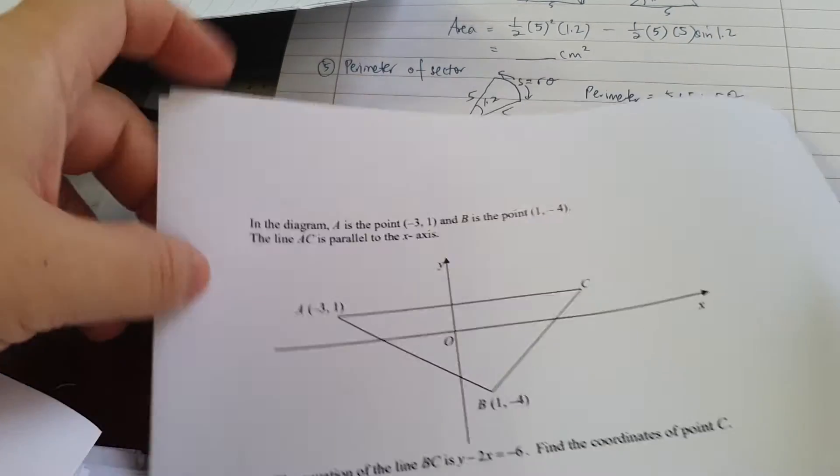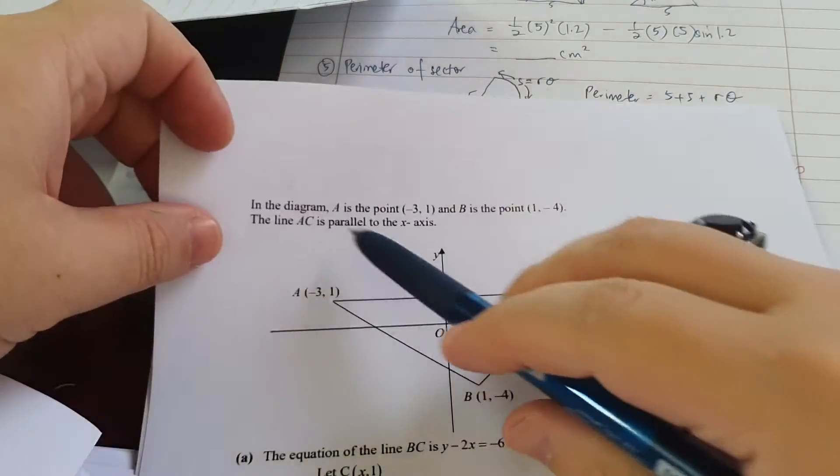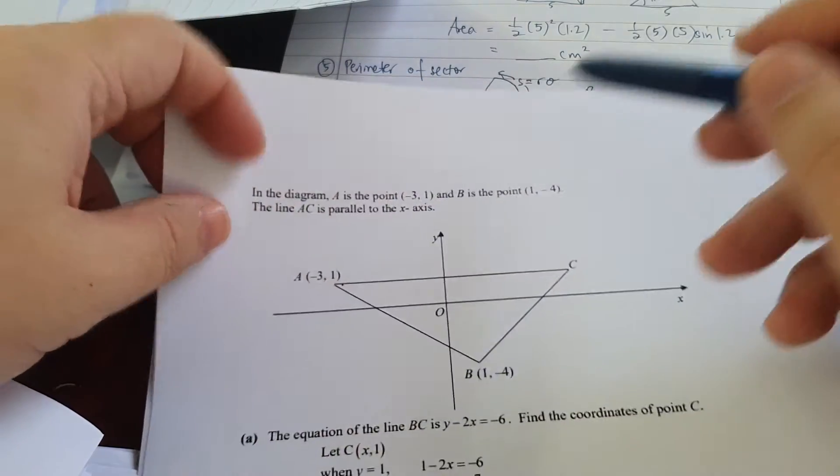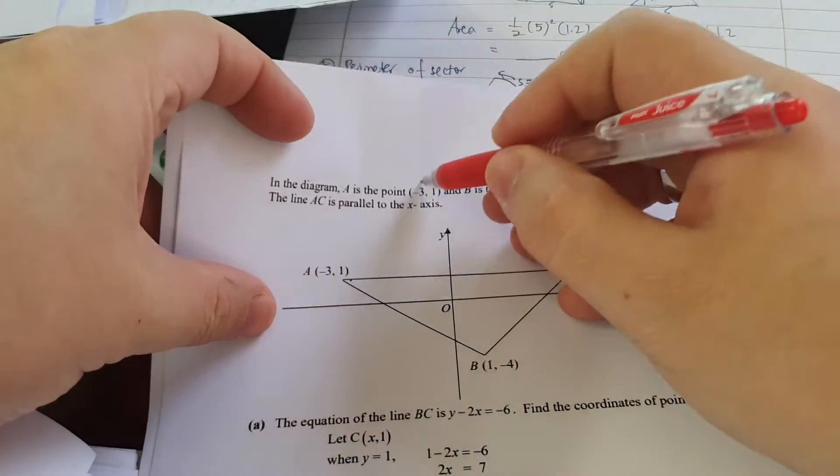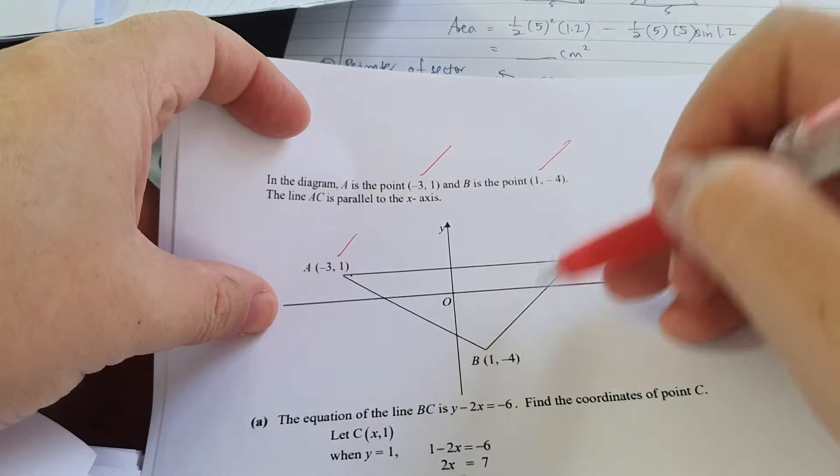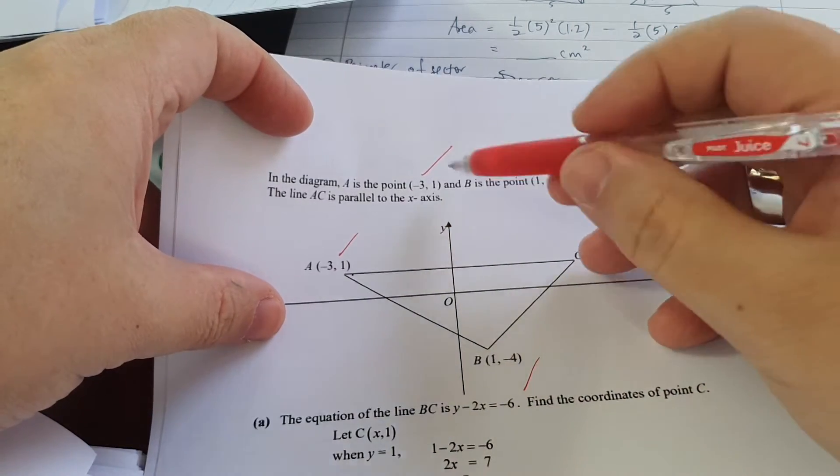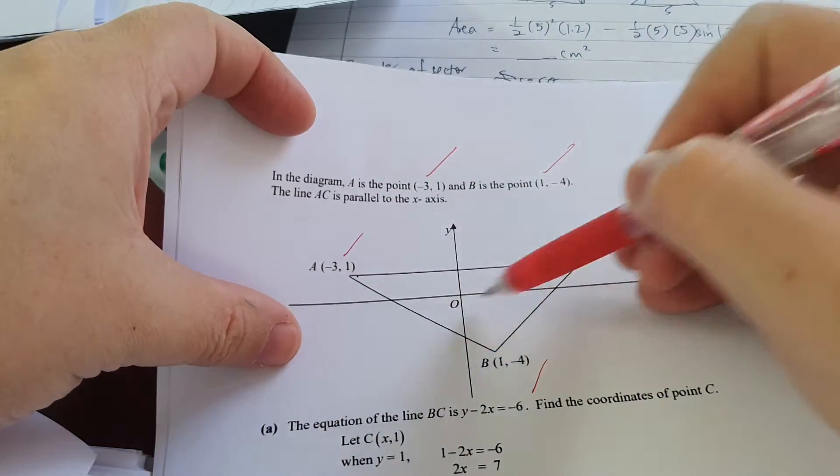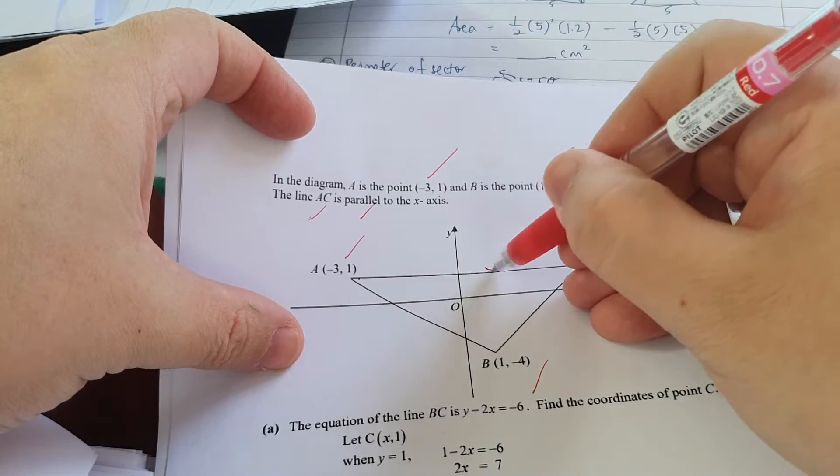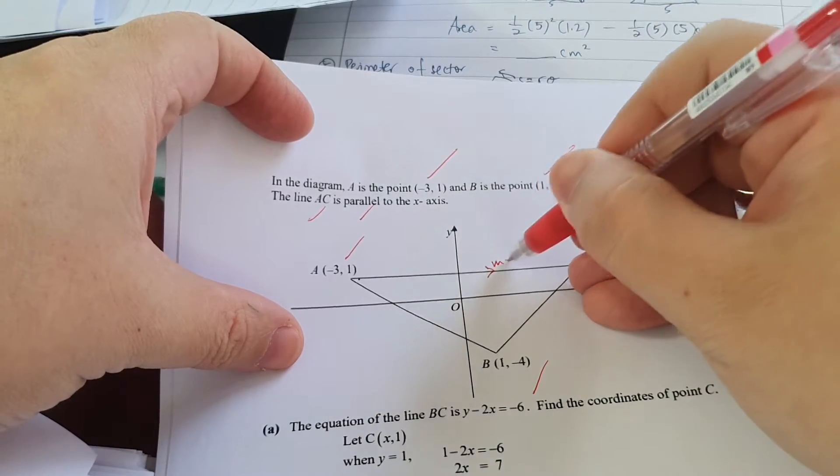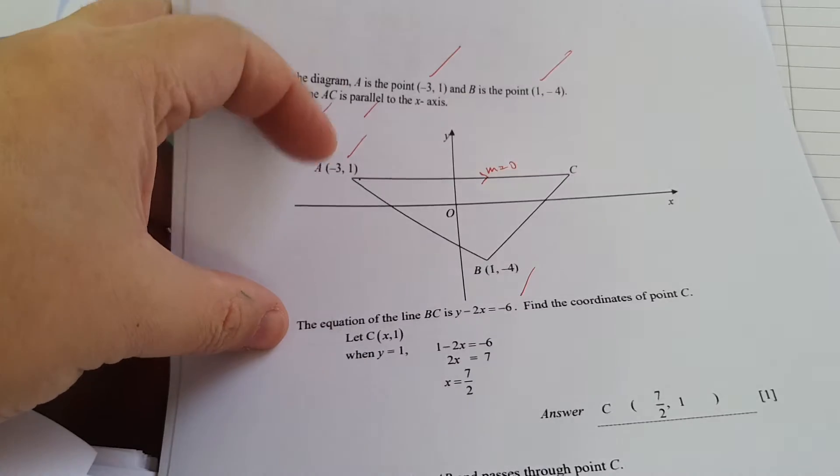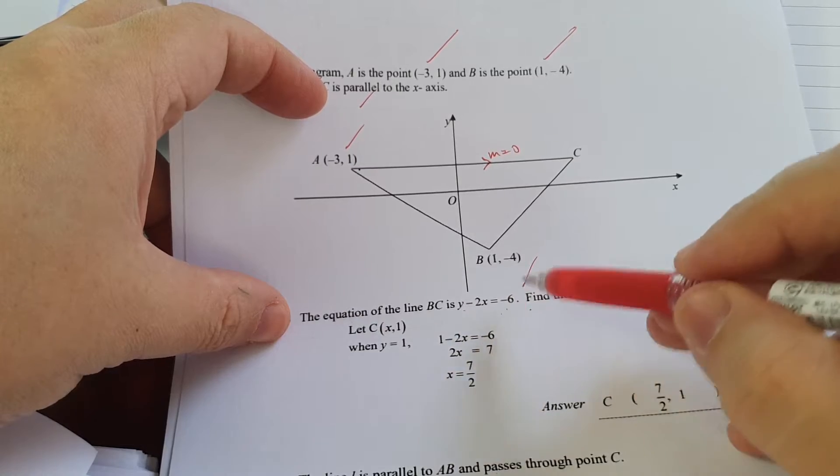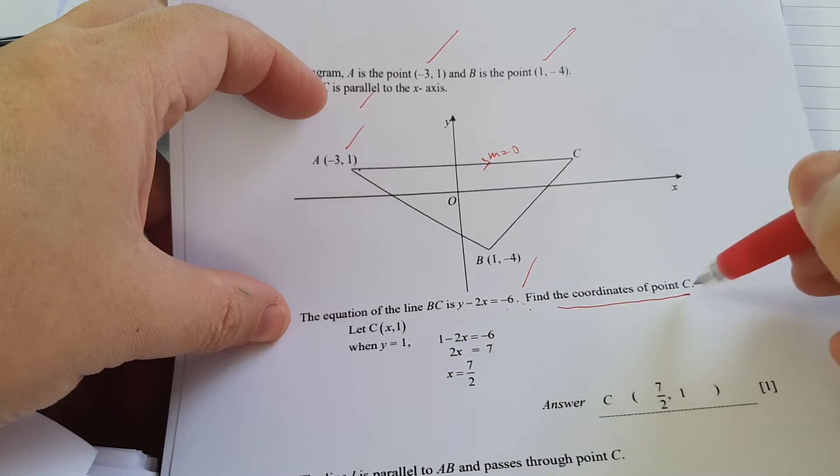Now if you look at this question, in the diagram, this one is this point, and this one is this point. The line AC is parallel to the X axis. All these things that they tell you are important. You cannot say I don't know what, tell me this for what. So the line AC is parallel to the X axis. It's parallel to the X axis means the gradient of this line is zero. Now the equation of the line BC is this. Why are they telling us this? Then they ask us to find the coordinates of C.